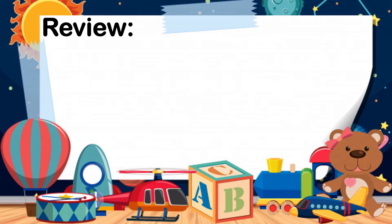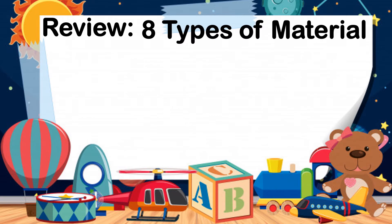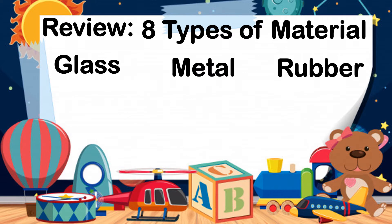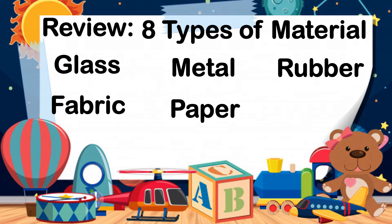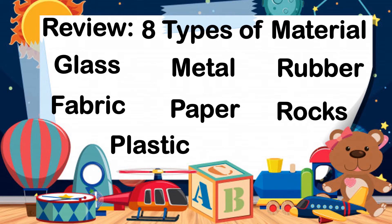Let's have a review first about our eight types of material. We have glass, metal, rubber, fabric, paper, rocks, plastic, and wood. Again, here are the eight types of material: glass, metal, rubber, fabric, paper, rocks, plastic, and wood.